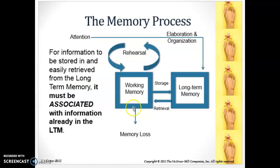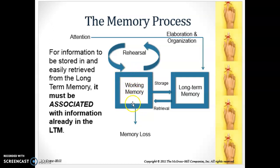For review — in order for information to be stored and easily retrieved from long-term memory, it first has to be associated with information that's already in long-term memory. I'll give you some examples of how that works. The bottom line is that the way you elaborate and organize information while you're paying attention to it is going to affect the way it's stored in your long-term memory.